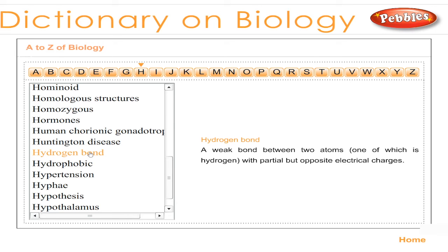Hydrogen bond: a weak bond between two atoms, one of which is hydrogen, with partial but opposite electrical charges.